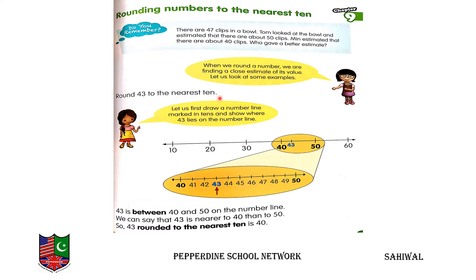Round 43 to the nearest ten. Now, earlier we had 47. 47 is near to 50 — counting: 47, 48, 49, 50 — only three numbers forward. But going backward from 47, we would need seven numbers. So Tom's estimation of 50 was correct — he made a good estimate.